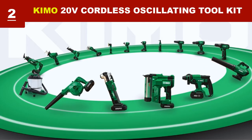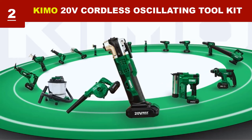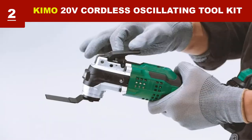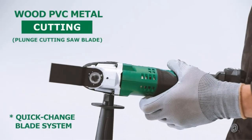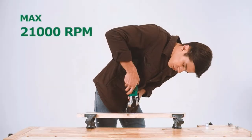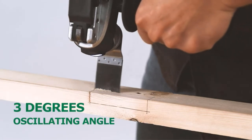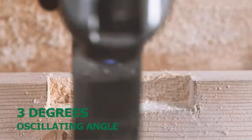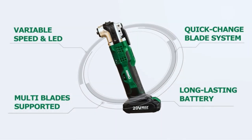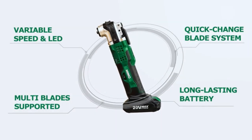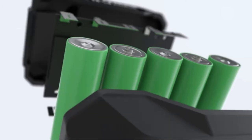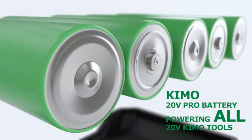Kimo 20V oscillating tool is a 2A lithium-ion battery-powered cordless tool which will give you more freedom to work. You can work with this in tight spaces. It has 6 speed options from 0 to 21,000 OPM. You can easily customize this speed according to your need for the work.